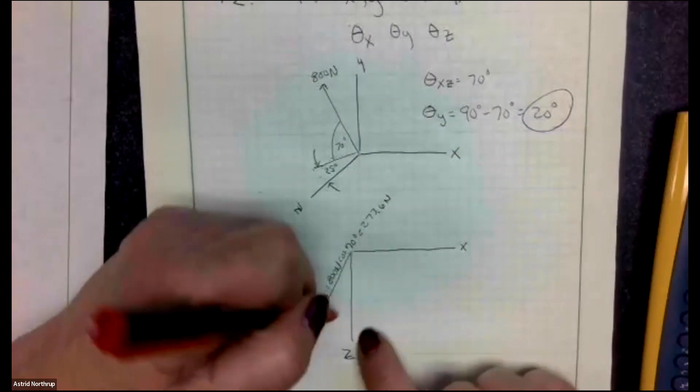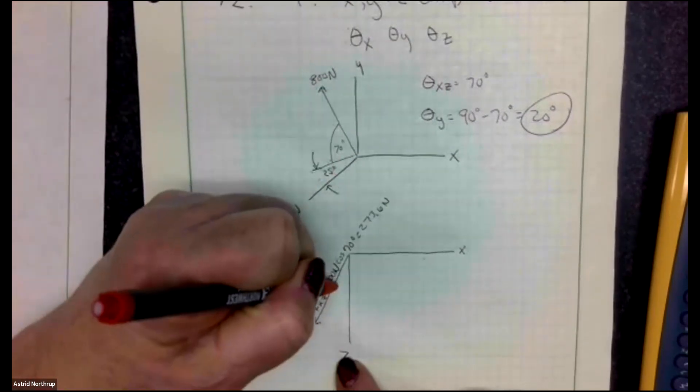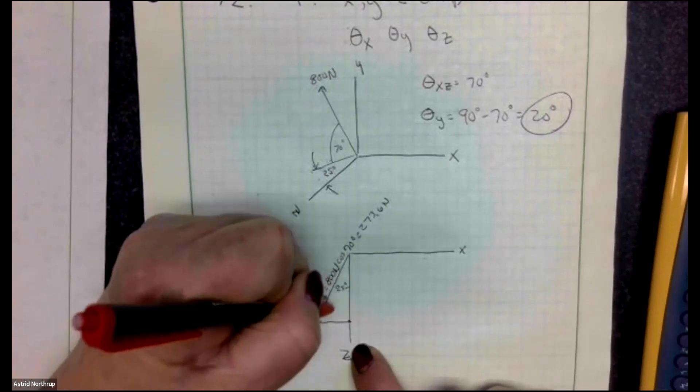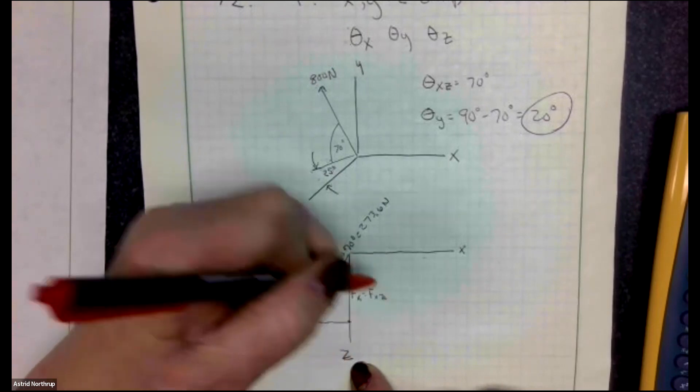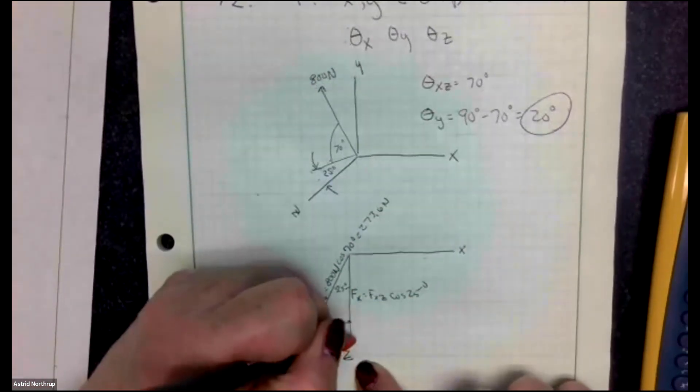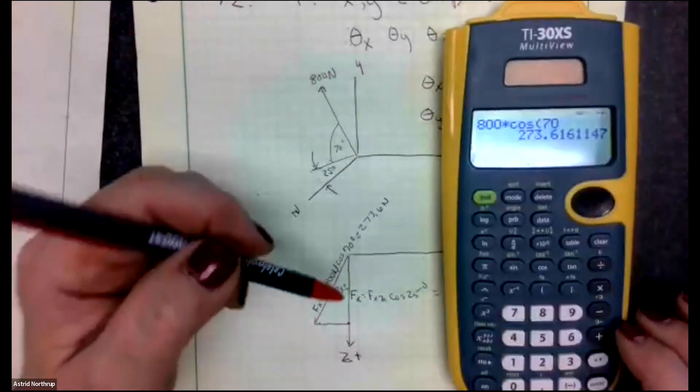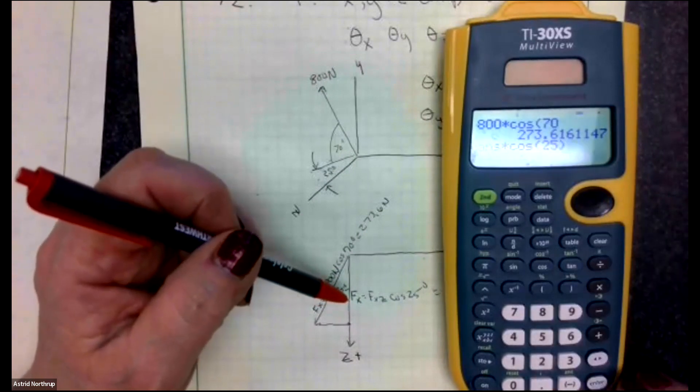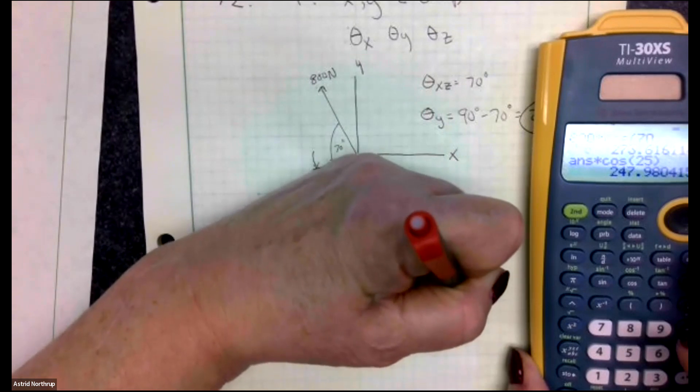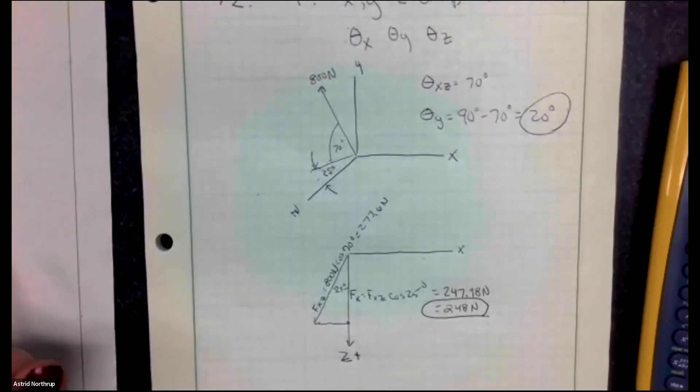Now, if we take a look, let's just project this 800 Newton force into the XZ plane. So the force in the XZ direction is 800 times the cosine of 70. So 800 times the cosine of 70 is equal to 273.616. So that means that the component of the force in the Z direction is going to be the force in the XZ direction times the cosine of 25 degrees. So 273.6 times the cosine of 25 degrees is 247.98 Newtons or 248 Newtons.